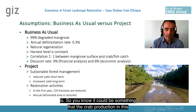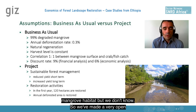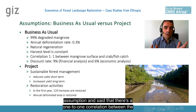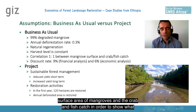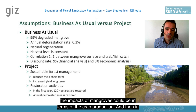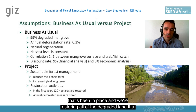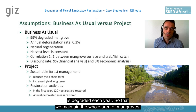We don't know what the exact relationship is — crab production could be more driven by overfishing or overcollection than by mangrove habitat. So we've made a very open assumption: a one-to-one correlation between the surface area of mangroves and the crab and fish catch, in order to show what the impact of mangroves could be in terms of crab production. In the project scenario, we have a sustainable forest management regime in place and we're restoring all degraded land each year to maintain the whole area of mangroves.